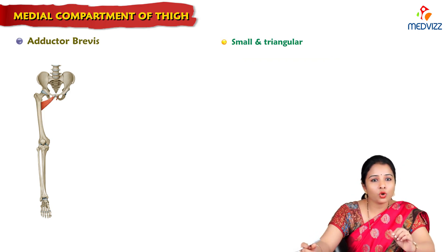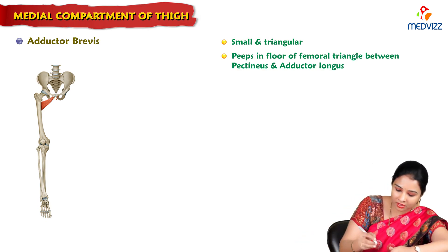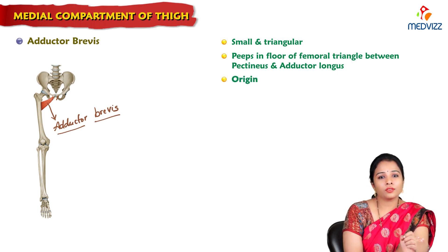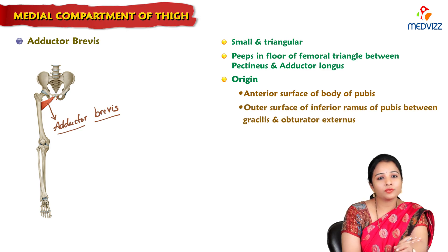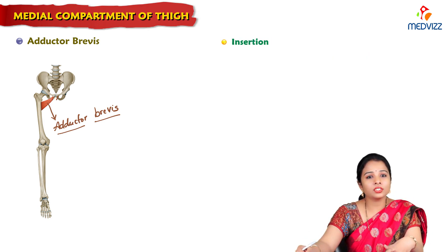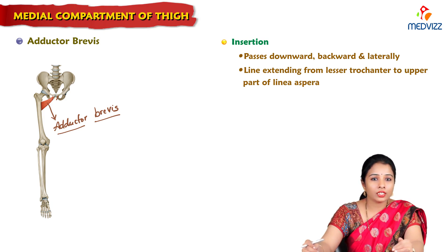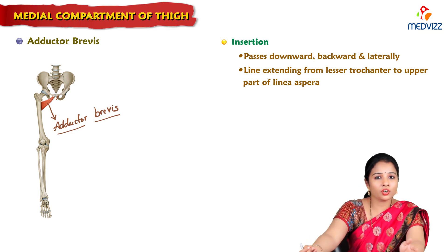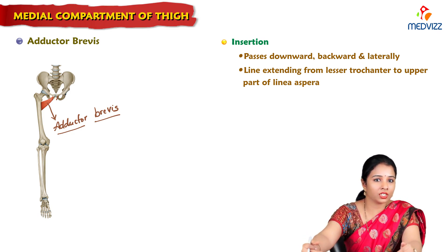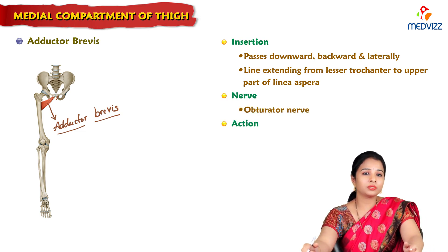Adductor brevis is a small triangular muscle that sometimes peeps into the floor of the femoral triangle between pectineus and adductor longus. Its origin is from the anterior surface of the body of the pubis and the outer surface of the inferior ramus of the pubis, between gracilis and obturator externus. It passes downwards, backwards, and laterally to insert along the line from the lesser trochanter to the upper part of the linea aspera, just behind pectineus and above adductor longus. It is supplied by the obturator nerve and helps in adduction of the hip joint.